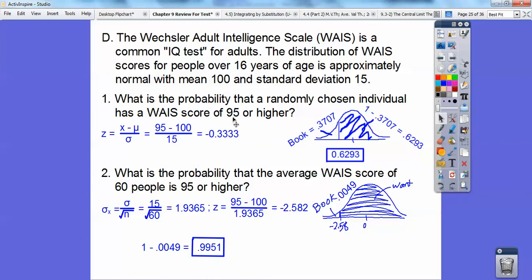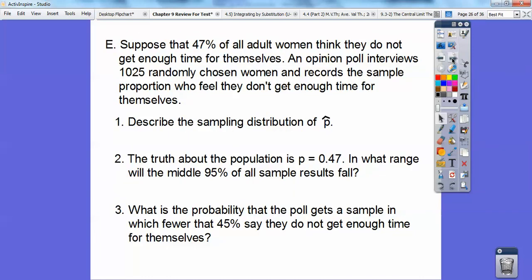Doesn't it make sense that since the mean is 100 and the standard deviation is 15, it's more likely that I pull a single person out that's going to be 95 or higher that's below the mean. But it's definitely a lot more likely that if I pull out a sample size of 60, 60 people or higher that it's going to be 95 or higher because you're doing more people, and chances are that you get bigger groups, the more accurate you're going to get.